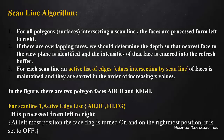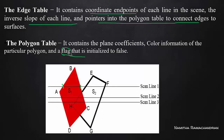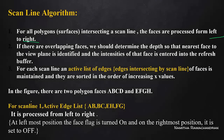This scanline algorithm works for all polygons, meaning surfaces intersecting a scanline. The phases are processed from left to right — the scanline number goes from left to right. If there are overlapping phases, we should determine the depth so that the nearest phase to the view plane is identified, and the intensity of that phase is entered into the refresh buffer.